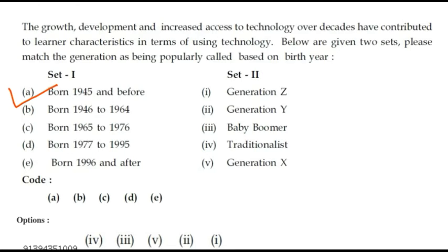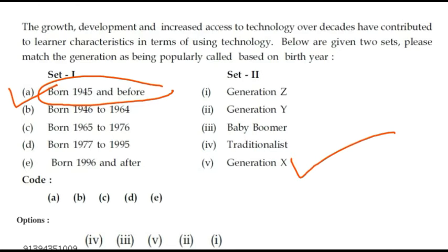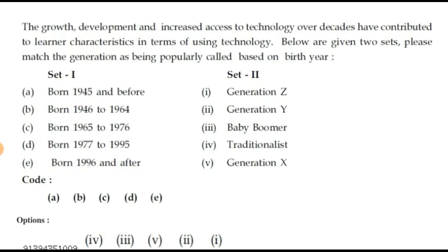Those who were born before 1945 are considered traditionalists — that is the right answer. They come under the traditionalist generation.